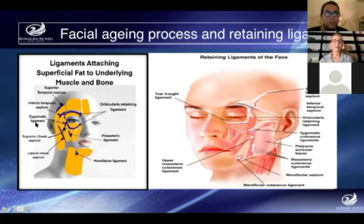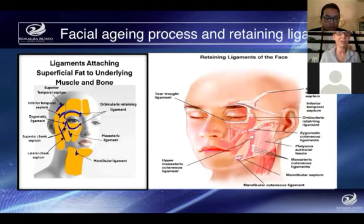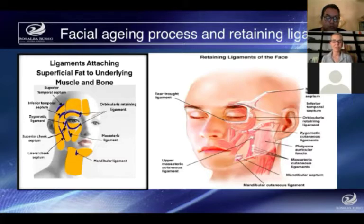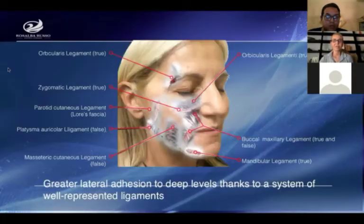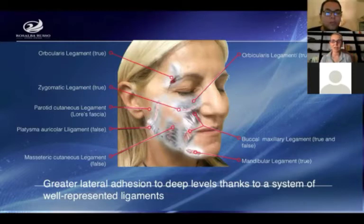Now it is important to speak about the retained ligaments. The retained ligaments age and relax, contributing to modifications of the face. They are responsible for modifications in the face segment. The areas of greatest interest for traction with threads are the nasolabial fold, the nasolabial area, the marionette line, and the jowl. The retained ligaments can be distinguished into true and false. The true ones are the orbicularis ligament, the zygomatic ligament, the mandibular ligament, and the buccal maxillary ligament.